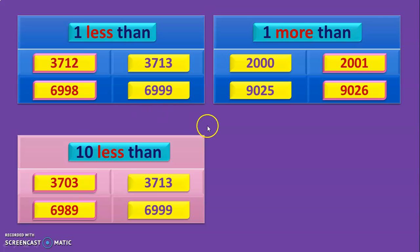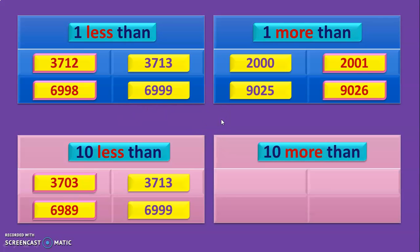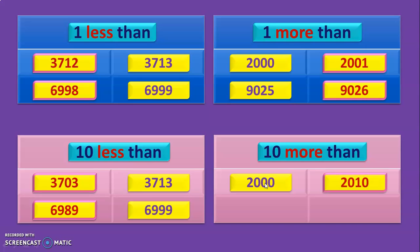Hope you are able to understand so far. Let us move on to the concept of 10 more than. Here the keyword to look out for is 'more', which means addition, and it is 10 more than. So we will have to look at the 10s place — there will be no change in the 1s place. The question given is 2,000. The 10s place has a 0, so we add 1 to it and the answer will be 2,010.